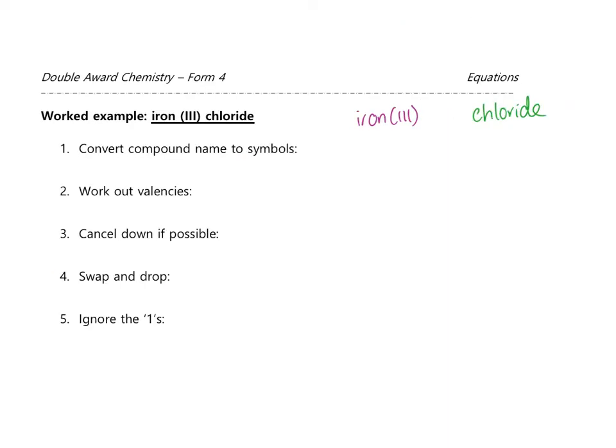Let's do one more example at the top of page six, bringing in transition metals which don't have a group number. Step one: convert the compound name to symbols. Iron has the symbol Fe — capital F, small e. Chloride is just chlorine that has become an ion, changing its ending to -ide, and has the symbol Cl — capital C, small l.